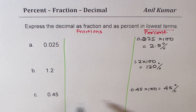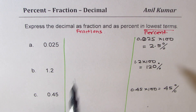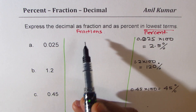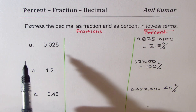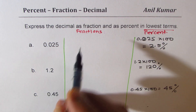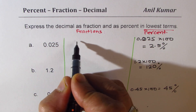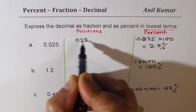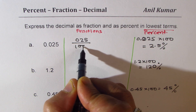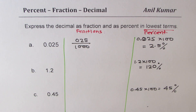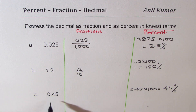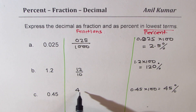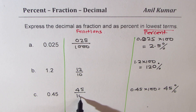Converting from decimal to percent or from percent to decimal is very simple. Now let's see how to do it in fractions. To get fractions, we have to avoid the decimal. There are three decimal places in 0.025, so we write 25 over 1000. One decimal place gives 12 over 10. Two decimal places gives 45 over 100.